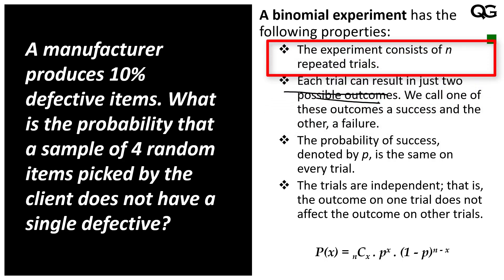Another property of binomial distribution is that a binomial experiment has n repeated trials. In this particular case, we have 4 repeated trials — we pick 4 pieces, and in each of these 4 pieces we look for success or failure, good or bad, pass or fail. So n is equal to 4.